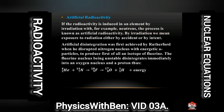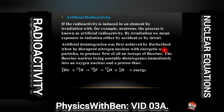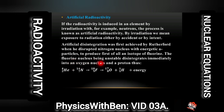By irradiation we mean exposure to radiation either by accident or by intent. Artificial disintegration was first achieved by Rutherford when he disrupted a nitrogen nucleus with energetic alpha particles to produce first an isotope of fluorine. The fluorine nucleus, being unstable, disintegrates immediately into an oxygen nucleus and a proton, as shown in this equation.